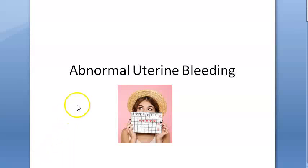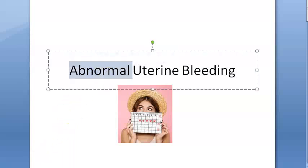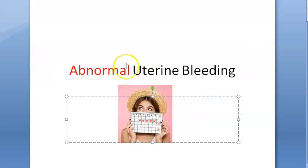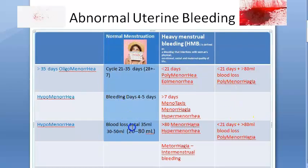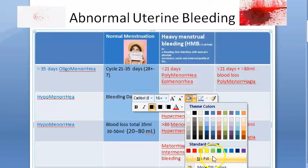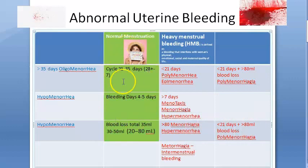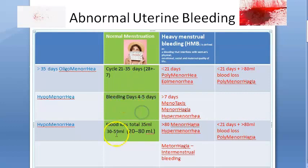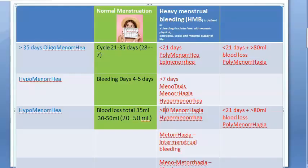In this video we want to look at abnormal uterine bleeding. To understand what is abnormal, let's first look at what is normal. Normal menstruation: the cycle will be 21 to 35 days, bleeding will be 4 to 5 days, and loss of blood will be around 35 ml — some sources say 30 to 50 ml.